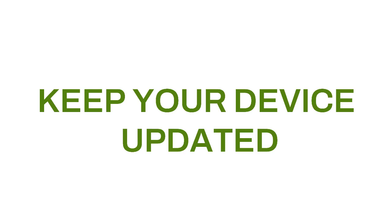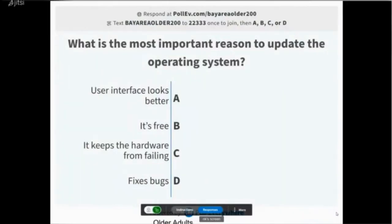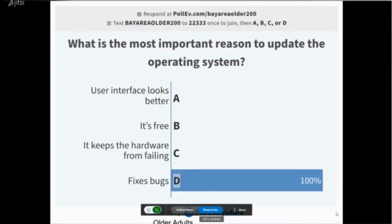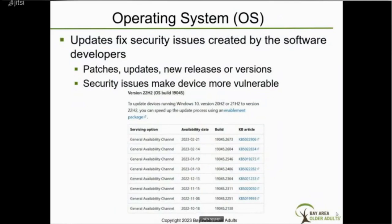Now let's cover how to keep your device updated. I'm going to focus on computers since they're more complex, but other devices are similar. What is the most important reason to update the operating system? Is it that the user interface looks better, it's free, it keeps the hardware from failing, or it fixes bugs? The correct answer is that it fixes bugs that make the device vulnerable to malware.